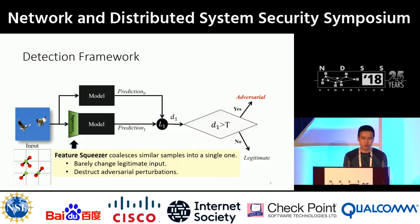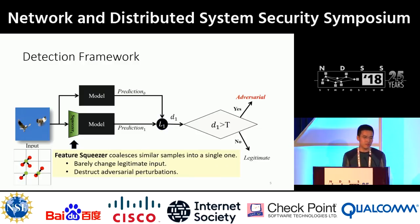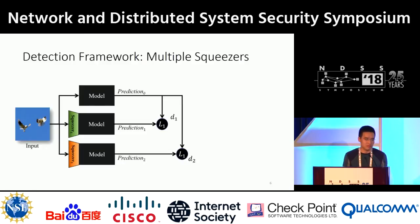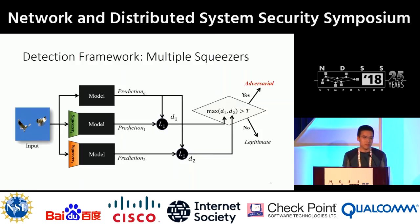We employ L1 distance to model the difference between the two predictions. If the L1 distance is larger than a pre-selected threshold value T, the framework issues an alert that the input is likely to be an adversarial example. This framework is simple and straightforward. However, we haven't found a single squeezer that is universally effective on all existing adversarial methods, so we introduce multiple squeezers. In that way, we get multiple L1 scores. We use the max function to aggregate those L1 scores, and if the maximum L1 score is larger than threshold T, the framework issues an alert.